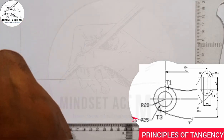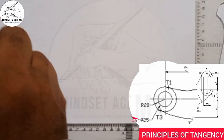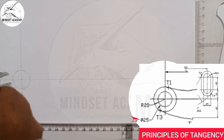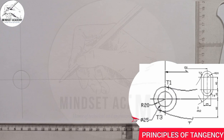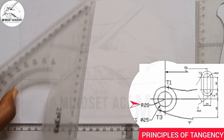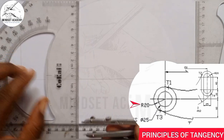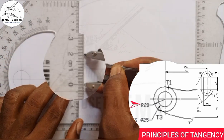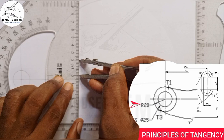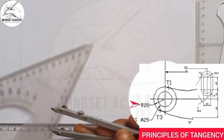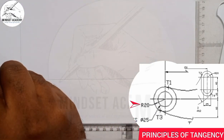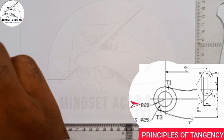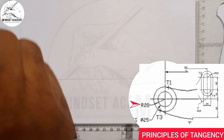The outer circle has a radius of 20, so I'll measure 20 on my ruler from 0 to 20, place it at the center point, and draw the outer circle.